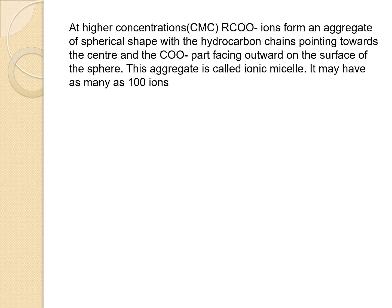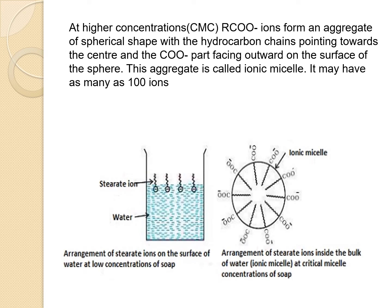At higher concentration, i.e. at CMC, RCOO⁻ ions form an aggregate of spherical shape with the hydrocarbon chain pointing towards the centre and the COO⁻ part facing outward on the surface of the sphere. This aggregate is called an ionic micelle, and it may have as many as 100 ions. The first figure shows the arrangement of stearate ions on the surface of water at low soap concentration, and the second shows ionic micelle formation at critical micelle concentration.